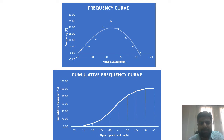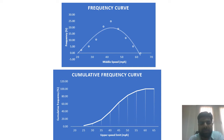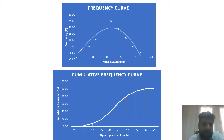This is the cumulative frequency distribution curve. On the x-axis is the upper speed limit of each group, and on the y-axis is the cumulative frequency, which can only go up to 100%. In this case, joining all the points works fine.